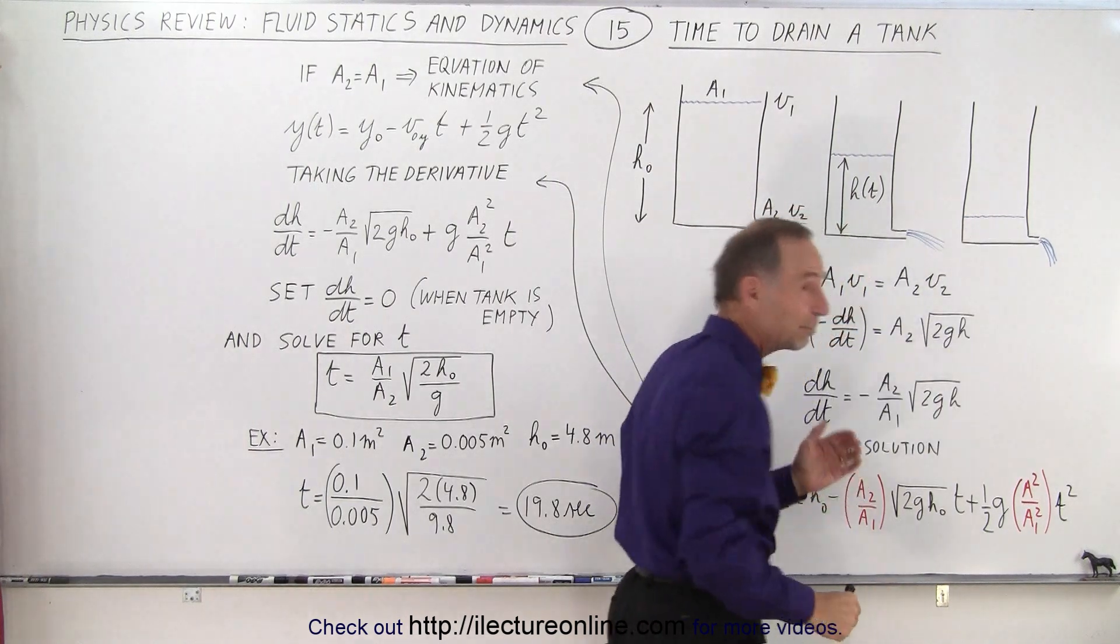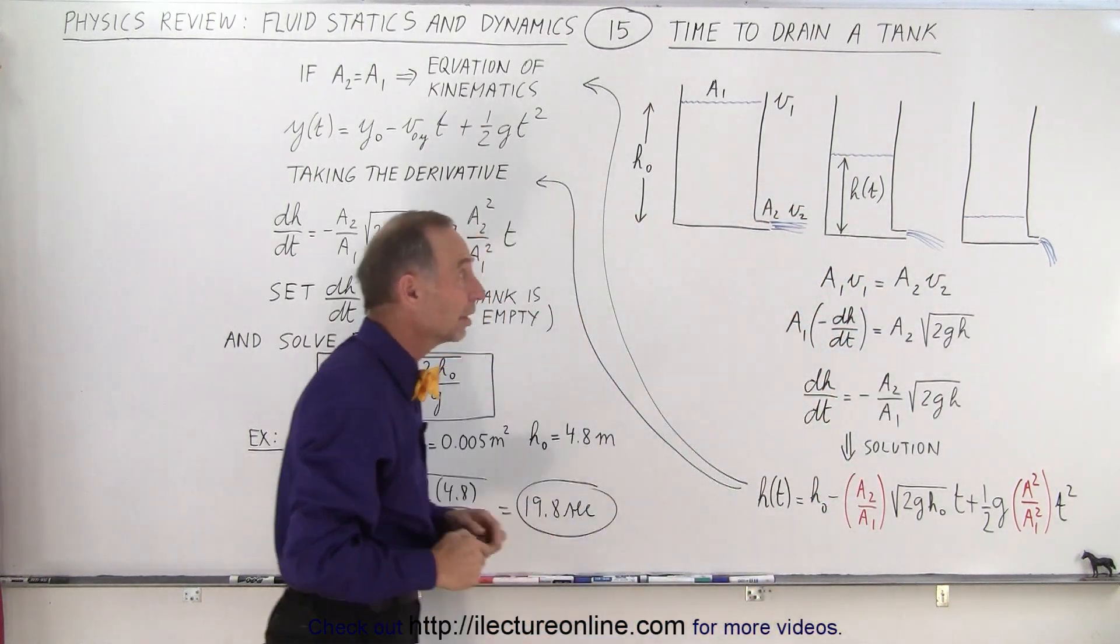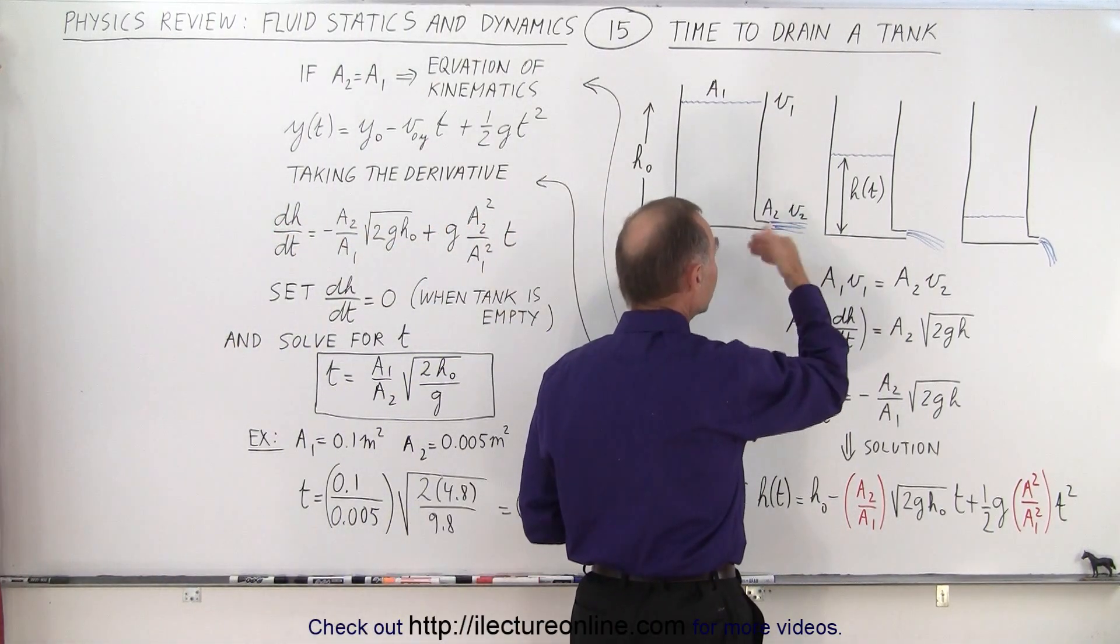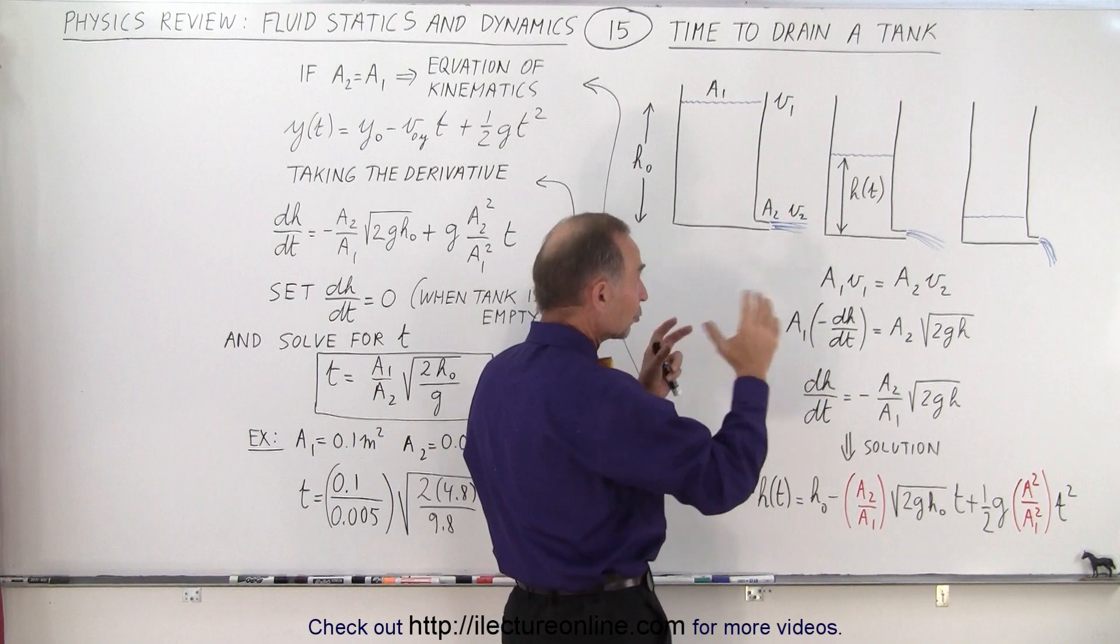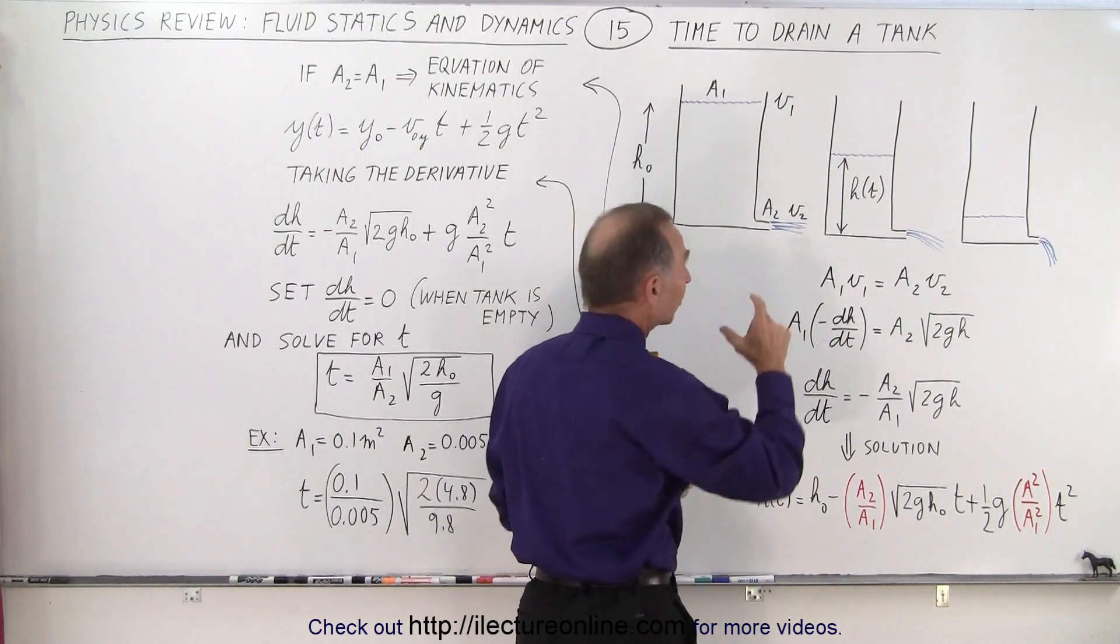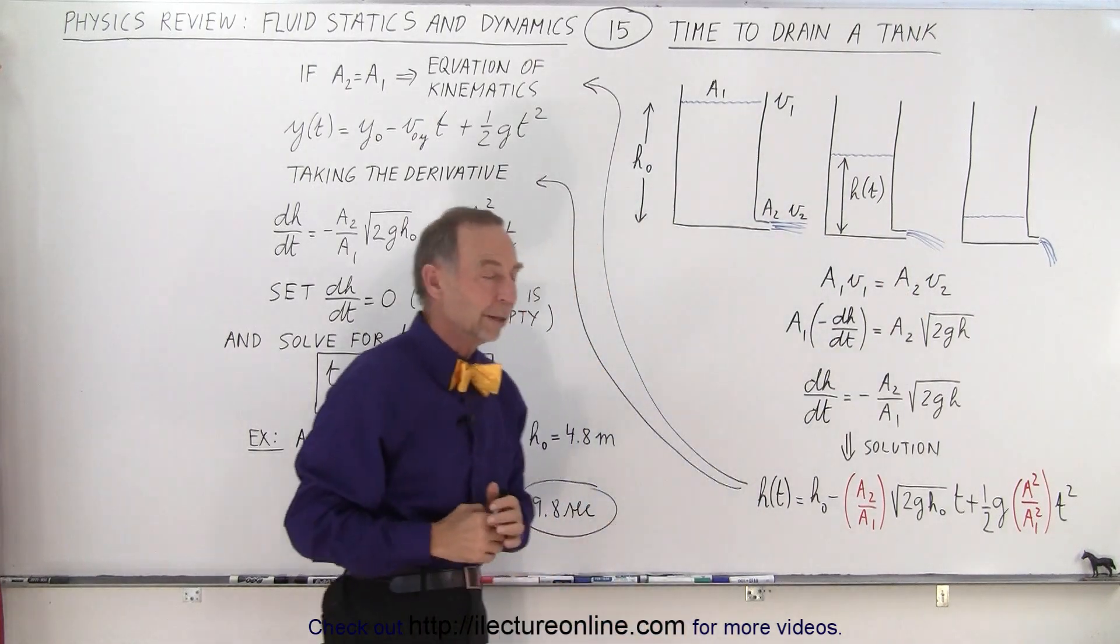Eventually when the tank is almost empty, the speed will be relatively small, because the velocity at the bottom is equal to the square root of 2gh in general, when we ignore the difference in the area of a1 and a2. So you can see that as h diminishes, v diminishes as well.